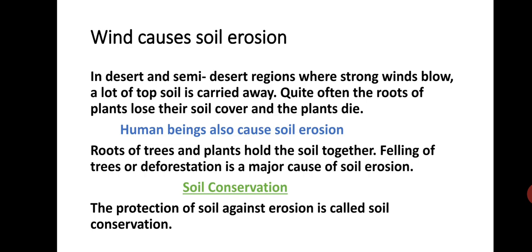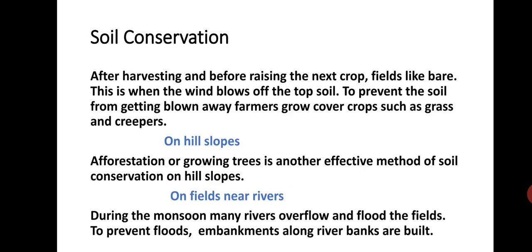Soil conservation: the protection of soil against erosion is called soil conservation. After harvesting and before raising the next crop, fields lie bare — this is when the wind blows off the topsoil. To prevent the soil from getting blown away, farmers grow cover crops such as grass and creepers. On hill slopes, afforestation or growing trees is another effective method of soil conservation.